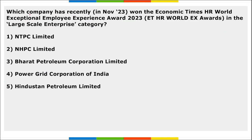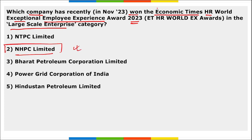Next: which company recently won the Economic Times HR World Exceptional Employee Experience Award 2023 in the large-scale enterprise category? It is NHPC. This award was conferred to NHPC in recognition of its wide range of employee-centric HR initiatives, which are not limited to employees only but also extended to their families.